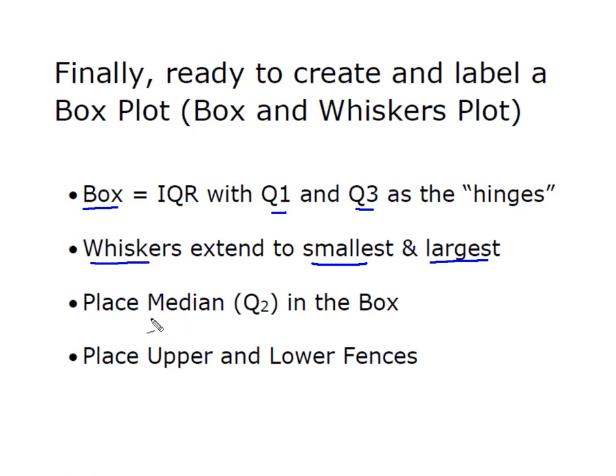We always want to put our median, which is also our Q2, inside the box. Where that median falls relative to the hinges is going to give us an indication of skewness. And last but not least, I'm going to place my upper and my lower fences onto the plot because these fences are going to tell me whether or not I have data that is considered to be an outlier.